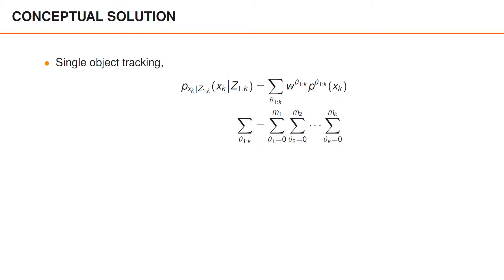In single object tracking, we saw that the general posterior is a mixture density, where each mixture component corresponds to a sequence of data associations from time 1 to time k. We have a weight for that sequence of data associations and a posterior density given the sequence of data associations. The weights are the probabilities of the sequences of data associations.